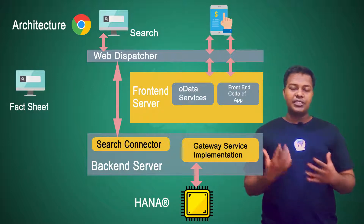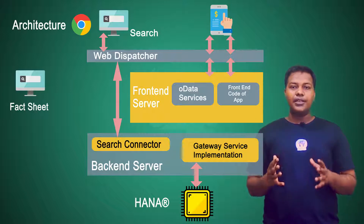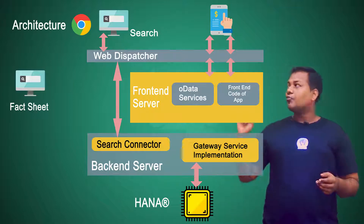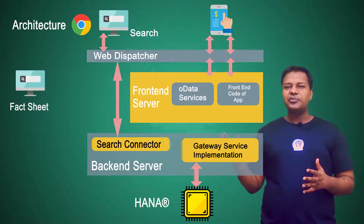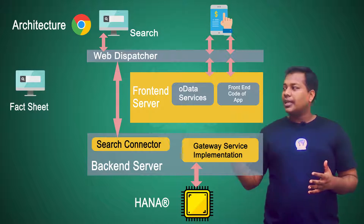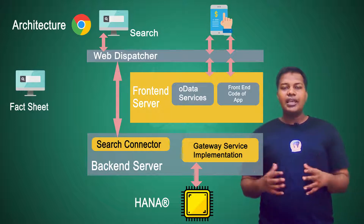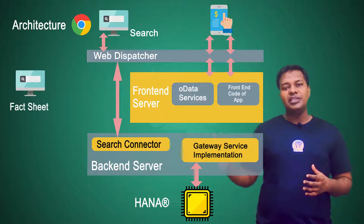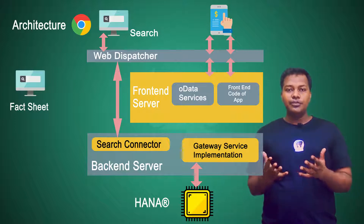The search can be for a purchase order or a sales order — just find it — and then all the data related to that is returned as an OData service and passed to the application. The previous steps remain the same; what is new is the additional layer of the web dispatcher. The search connector is additionally placed to take all search requests and programmatically searches the entire database to find any relevant information about a particular field or keyword.